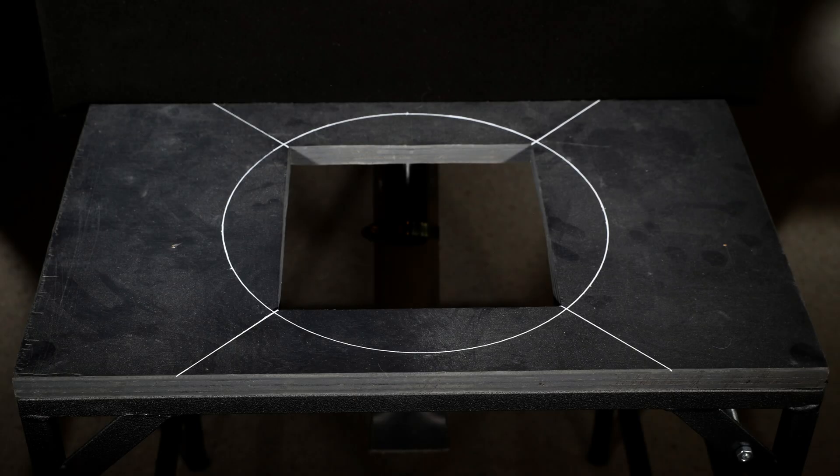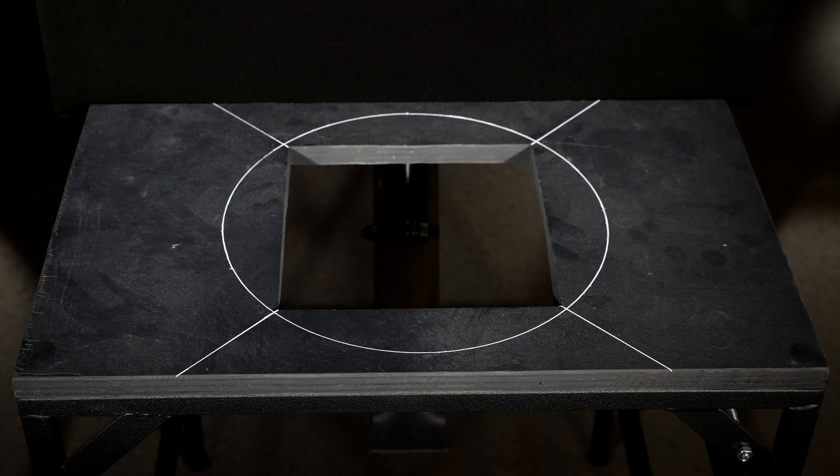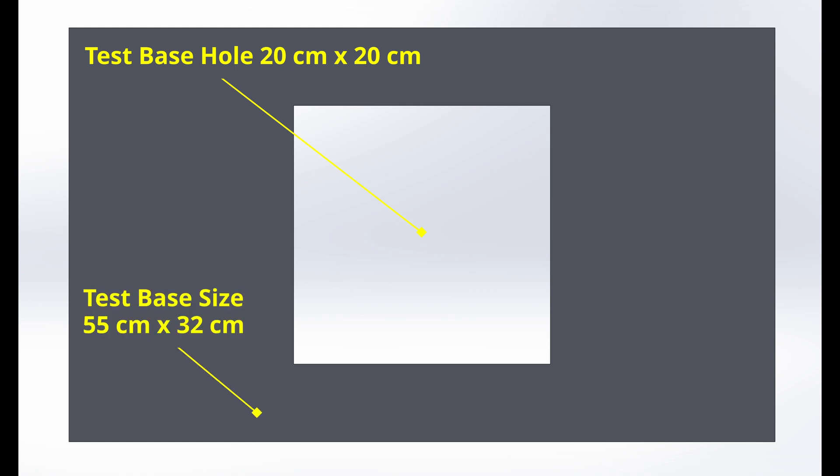Here is a picture of my primary testing surface. For now, you can ignore the white lines and just focus on the core piece and the 20 by 20 centimeter hole in the middle. Here is a precise scale drawing of the testing surface with just the 20 by 20 centimeter hole. The rules state that the size of the rest of the testing surface must be at least 55 centimeters long by 32 centimeters wide.